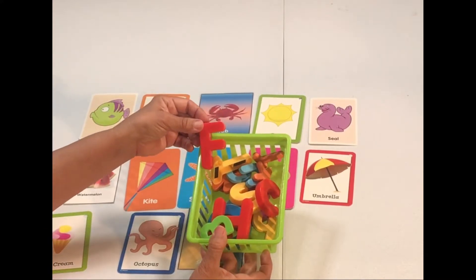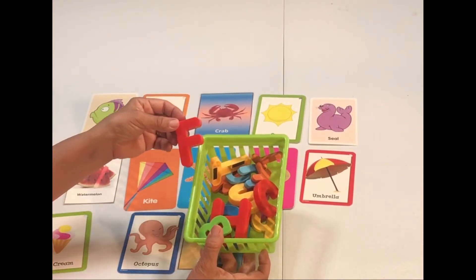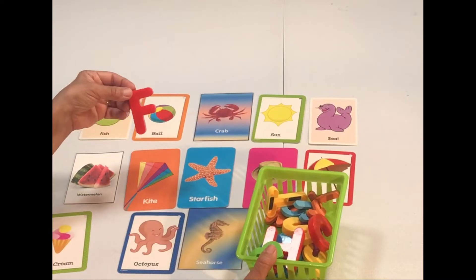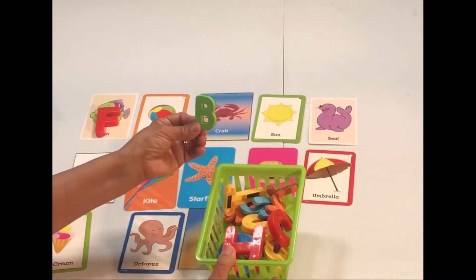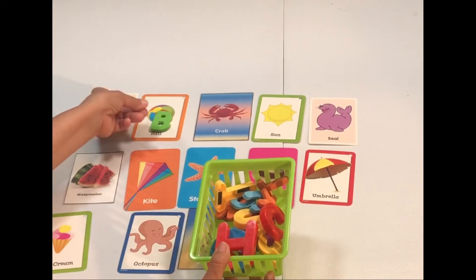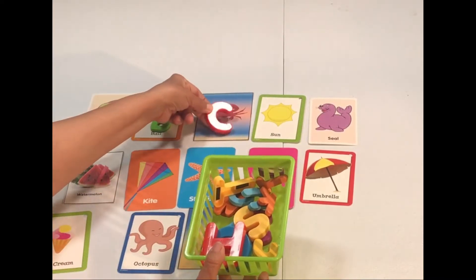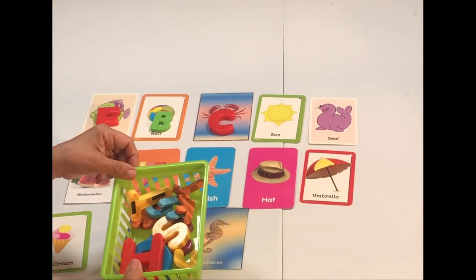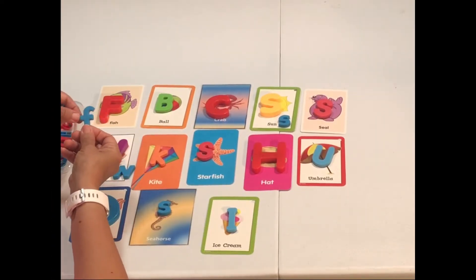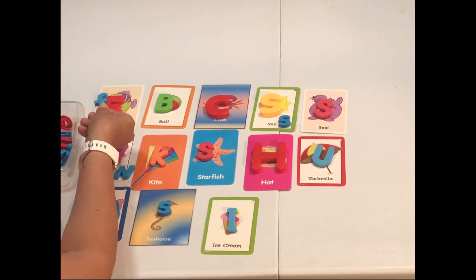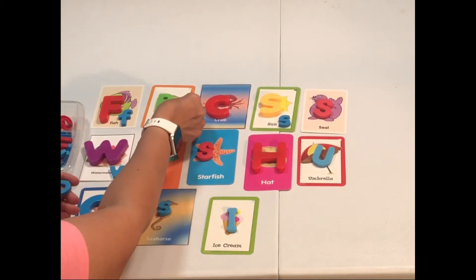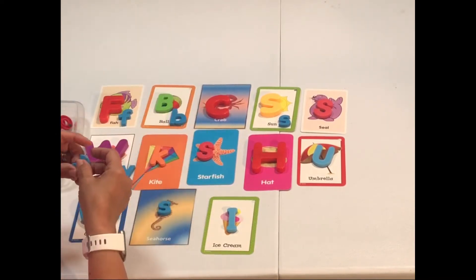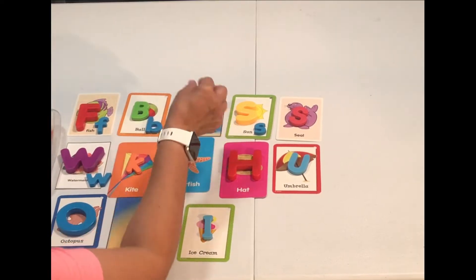You can also use magnetic letters and do a beginning letter sound activity. You can also have your child match the uppercase and the lowercase letters: F, B, K, and so on.